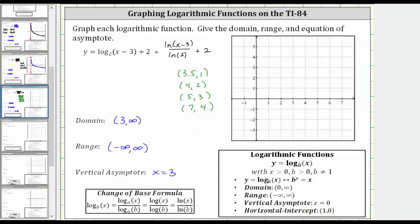Now to graph the function, let's first sketch the vertical asymptote of x equals three, which is here. Now we'll plot these convenient points and see if we have enough points to make a nice graph. So 3.5 comma one is here. Four comma two is here. Five comma three. And seven comma four.